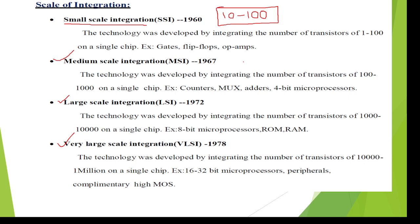And if you integrate more than 100, that is 100 to 1,000 transistors on a single chip, then it is named as medium scale integrated circuit. Medium scale integrated circuit examples include counters, muxes, adders, 4-bit microprocessors, etc.